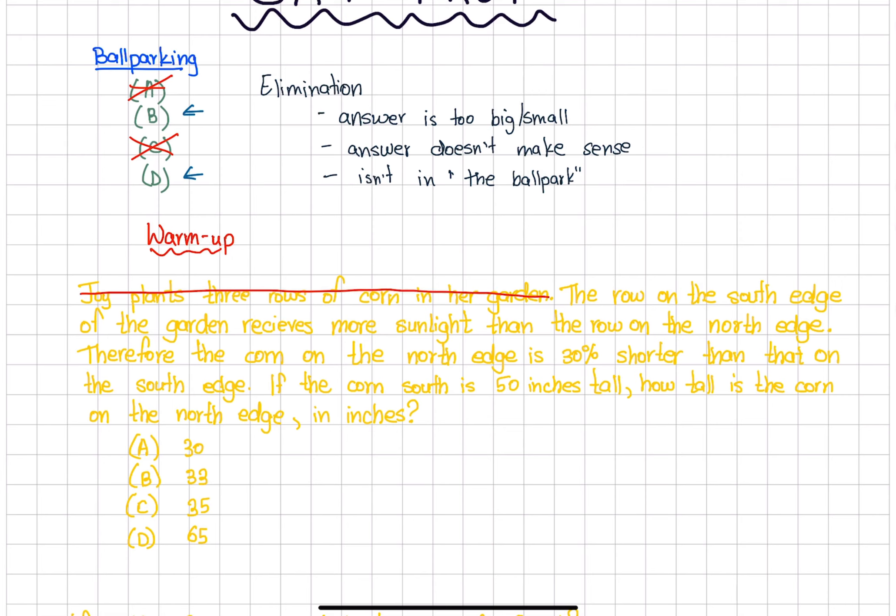Joy plants three rows of corn in her garden - this isn't really needed, so I'm going to cross that out. The row on the south edge receives more sunlight - this isn't really necessary. What we need is the corn on the north edge is 30% shorter than that on the south edge. The corn south is 50 inches tall.